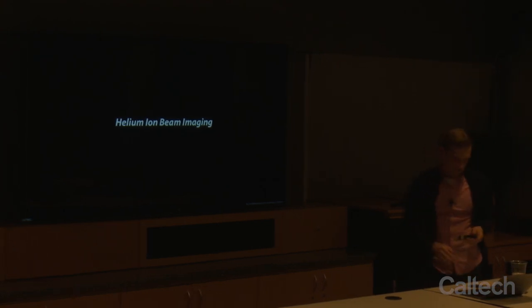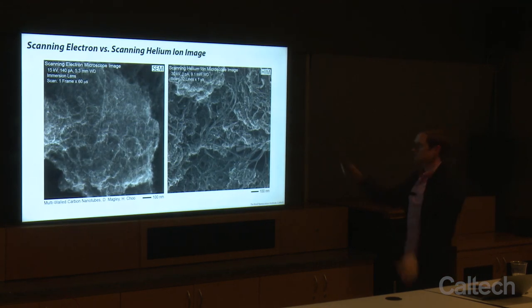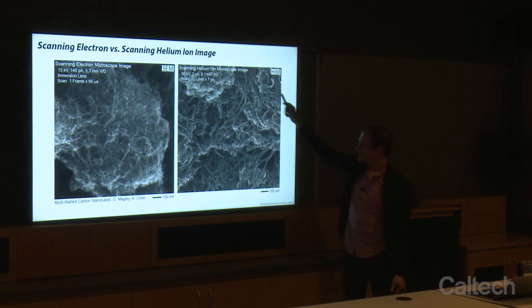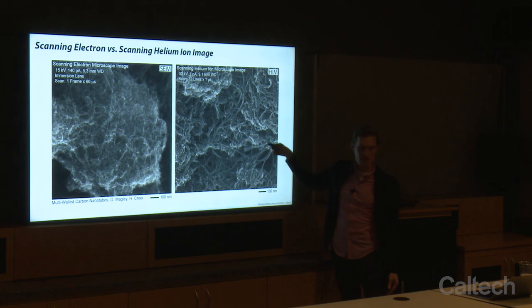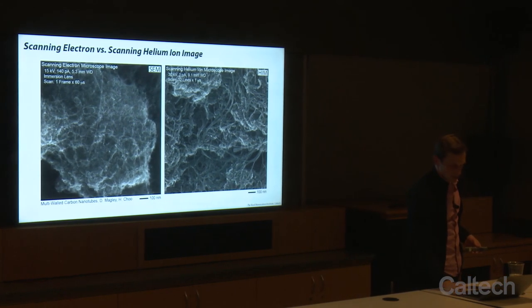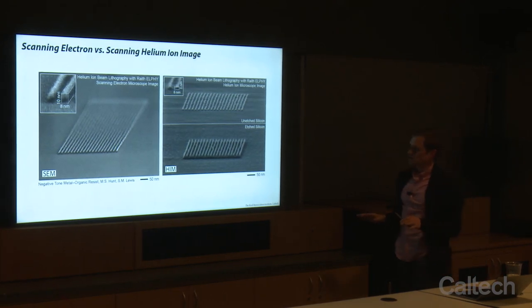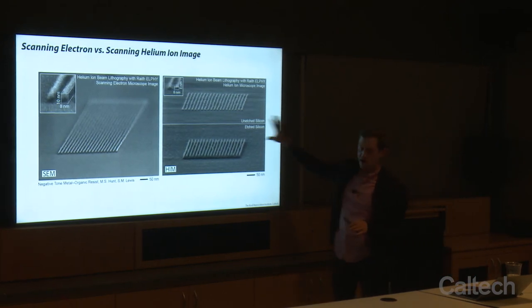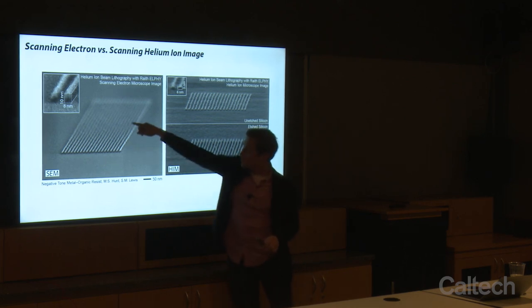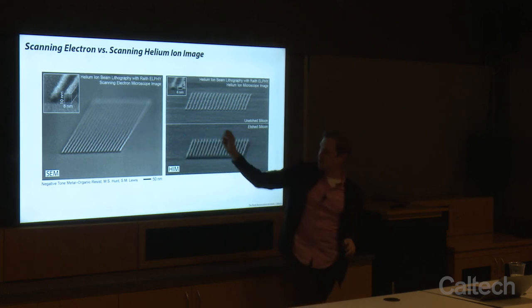Now we'll do a lot of examples. Here we have helium ion beam imaging first. I showed earlier the difference between helium ion and scanning electron microscopy — the great resolution and depth of field simultaneously that we have with helium. Here's an example where you can see dramatically the difference in depth of field. This is scanning electron microscopy of really small lines, about eight nanometers, patterned resist.